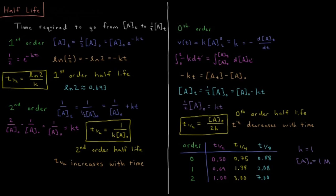For zero-order reactions, we need to derive the integrated rate law. The reaction rate V(t) equals k times A(t) to the zero power, so the reaction rate is just equal to k, and that equals minus dA/dt. Separating variables, the integral from 0 to t of minus k dt equals the integral from A0 to A(t) of dA. This gives minus kt equals A(t) minus A0, so the concentration as a function of time equals the initial concentration minus the rate constant times time.